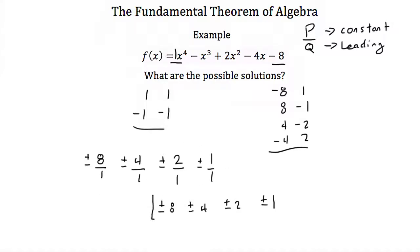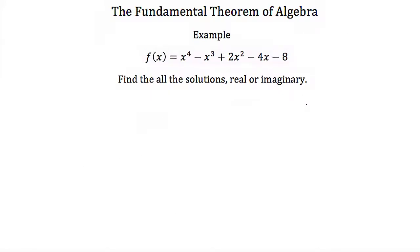So we have 8 possible rational solutions, but we know this function will only have 4, and not all of them may be rational. To find all solutions, real or imaginary, our first step will be to test these using synthetic division. The possible values are plus or minus 8, plus or minus 4, plus or minus 2, and plus or minus 1.